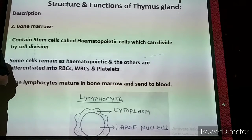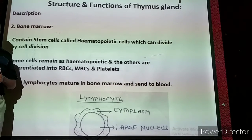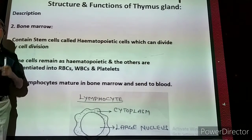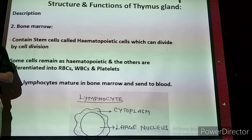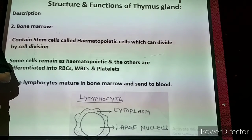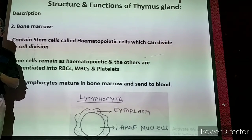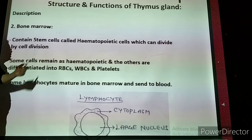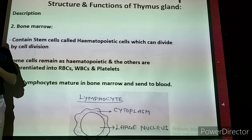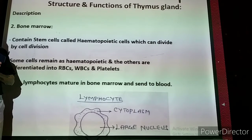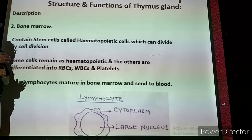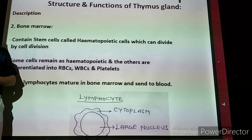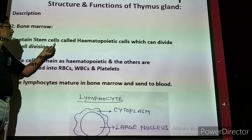Stem cells is the latest terminology used in biotechnology and also in medical science. Stem cells are undifferentiated, very basic and common cells. They can be changed into any other type of cells in the bone marrow — they can be changed into RBC, WBC, or differentiated into platelets. So these basic cells are called stem cells.